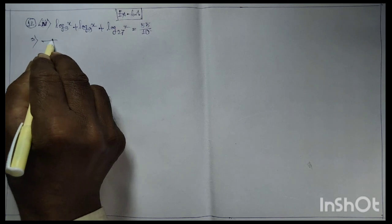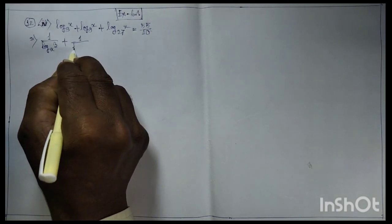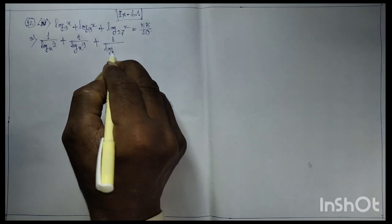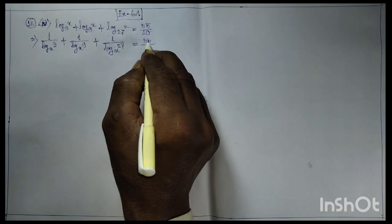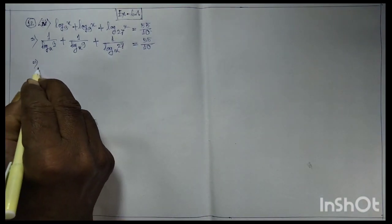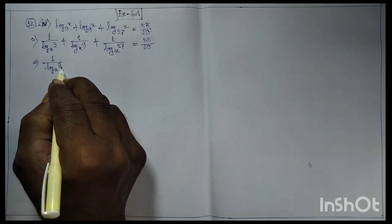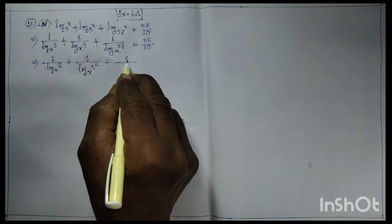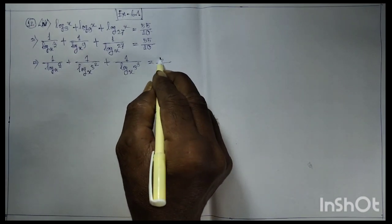This implies 1 by log(x) base 10 plus 1 by log(x) base 9 plus 1 by log(x) base 27 equals 55 by 10, using the change of base formula, replacing each term with 1 by log base x.